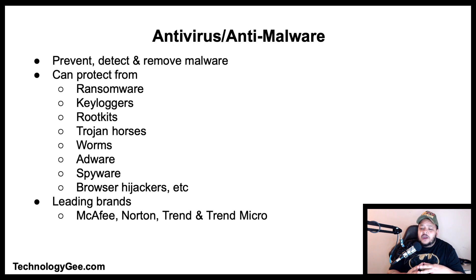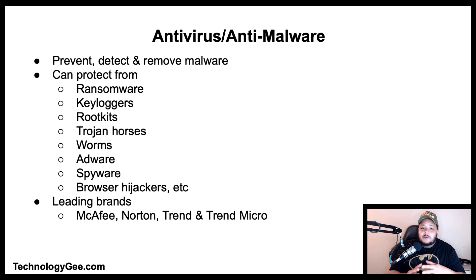Let's talk about antivirus and anti-malware. Antivirus/anti-malware is a computer program used to prevent, detect, and remove malware. Antivirus software was originally developed to detect and remove computer viruses, but with the proliferation of other kinds of malware it now provides protection from ransomware, keyloggers, rootkits, trojan horses, worms, adware, spyware, browser hijackers, and more. Some of the leading vendors are McAfee, Norton, and Trend Micro, which also provides protections for mobile operating systems such as iOS.